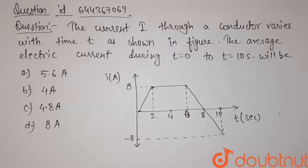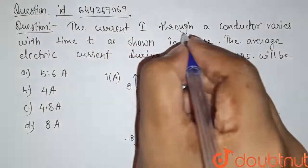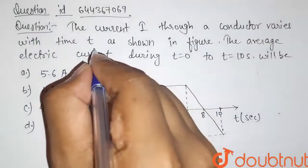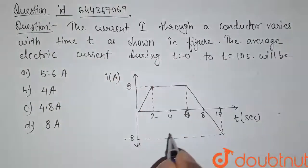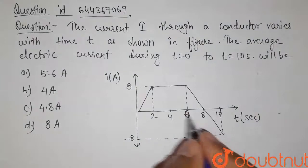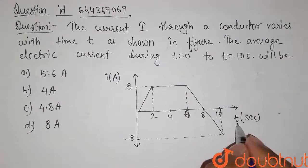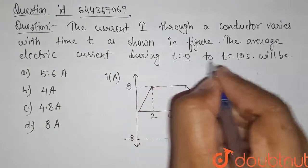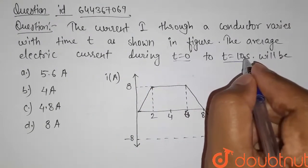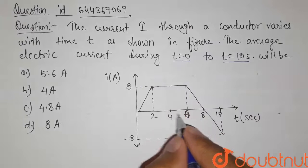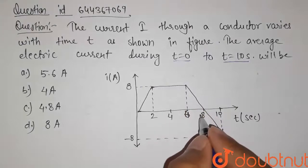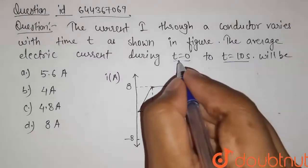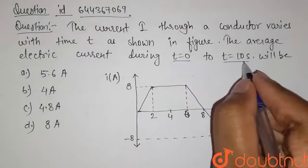Hello students. Here is our question. The current i through a conductor varies with time t as shown in figure. So this is the given figure between current i and time t. The average electric current during t equals 0 to t equals 10 seconds. We have to find the average electric current for this graph between time interval from 0 to 10 seconds.